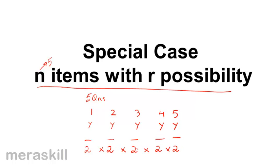So there are 2×2×2×2×2, that is 2 raised to 5, ways in which he can attempt these five questions. In general, suppose there are n items — here n is 5 — and each question has two possibilities: attempt or not attempt. So r equals 2 in this case.